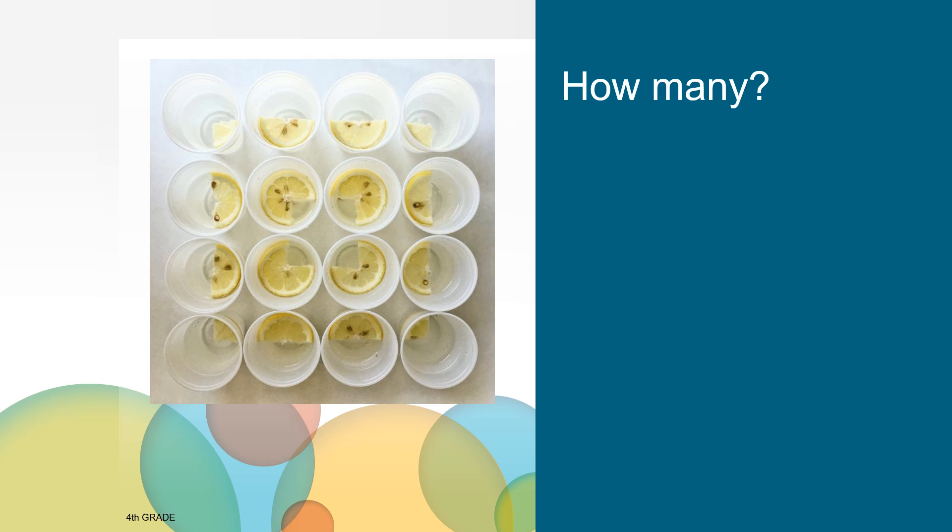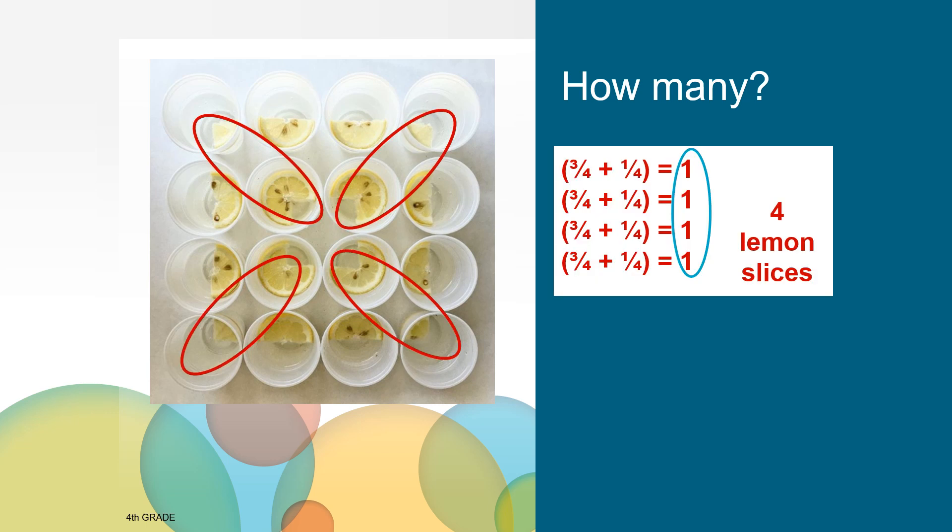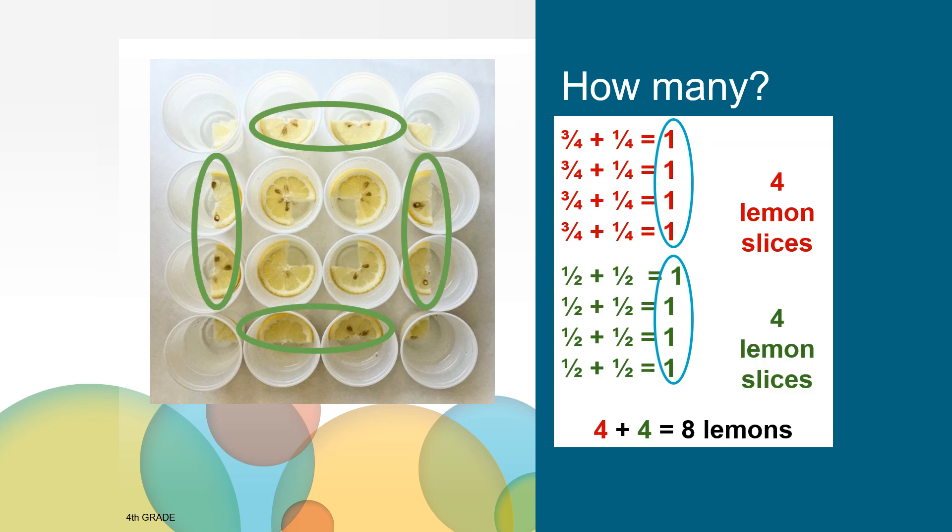It can be helpful to think about putting the parts together to make whole lemon slices. For example, I can add the four one-fourths to the four three-fourths, and I can see that I will get four whole lemon slices. I can then add the eight halves together to get four more whole lemon slices. I can then see that the four lemon slices from the three-fourths and the one-fourth, and the four lemon slices from the halves, make eight whole lemon slices.